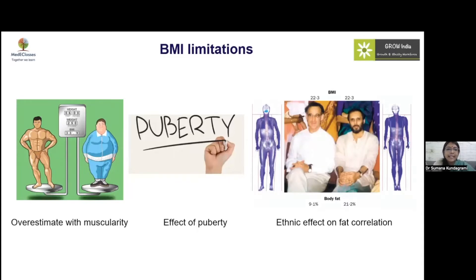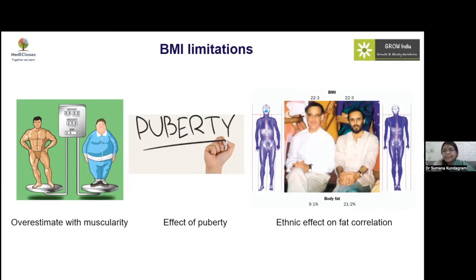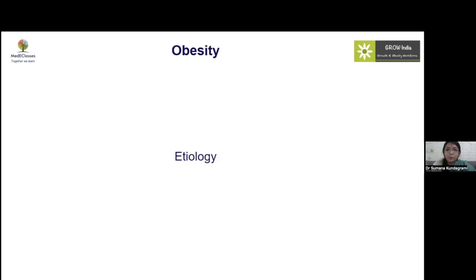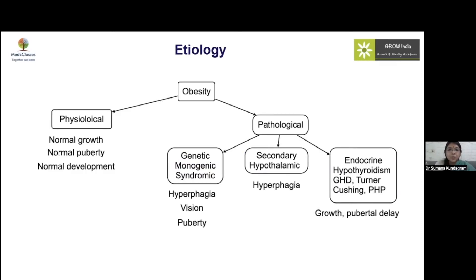Although BMI correlates well with body fat percentage, it has limitations. It doesn't differentiate between lean mass and fat mass — it can overestimate obesity in highly muscular individuals. During puberty, BMI may not accurately reflect obesity parameters, as early puberty may cause a higher BMI. Additionally, for Indians with more visceral fat distribution, complications can develop at lower BMIs, making BMI limited for this population.